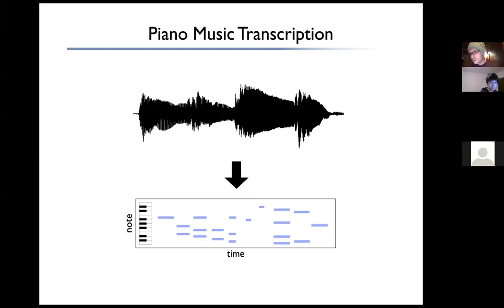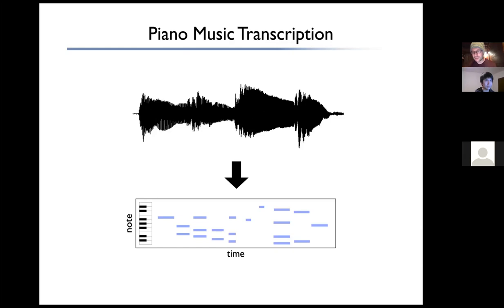MIDI is a digital music representation format that records how the piano was touched over time. It's like a matrix with time on the x-axis and the piano key on the y-axis. Blue bars indicate when a note was pressed and how long it was held before being released. MIDI actually contains more information than sheet music — you can go from MIDI to sheet music if needed. We're predicting MIDI because it's more useful for digital remastering and because it directly records how hard you press each note.